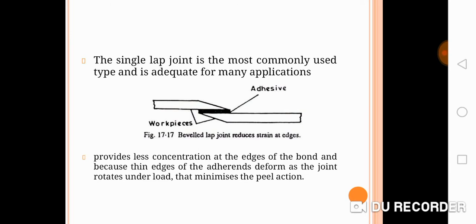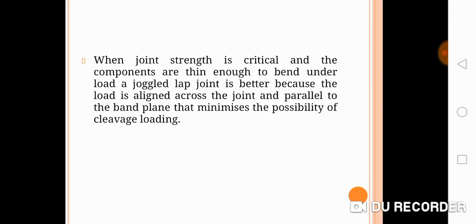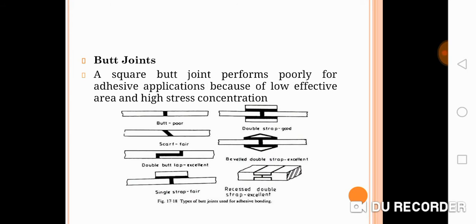The single lap joint is the most commonly used type and is recommended for many applications. However, the bevel lap joint reduces strain at the edges, so you can slightly modify the design according to your purpose. Regarding butt joints, the normal butt joint is very poor in adhesive bonding, but the double butt lap joint is an excellent joint configuration.